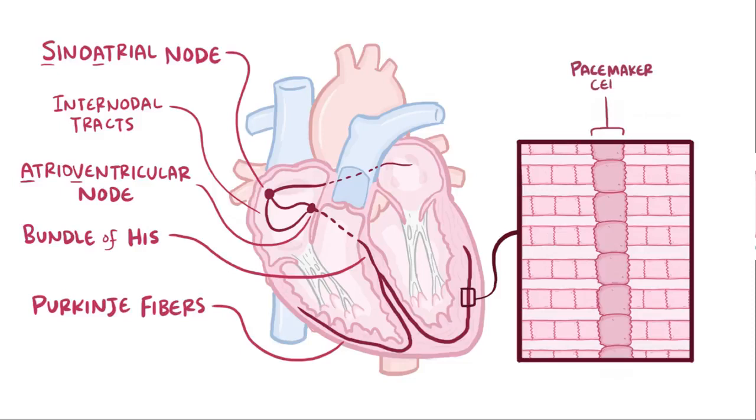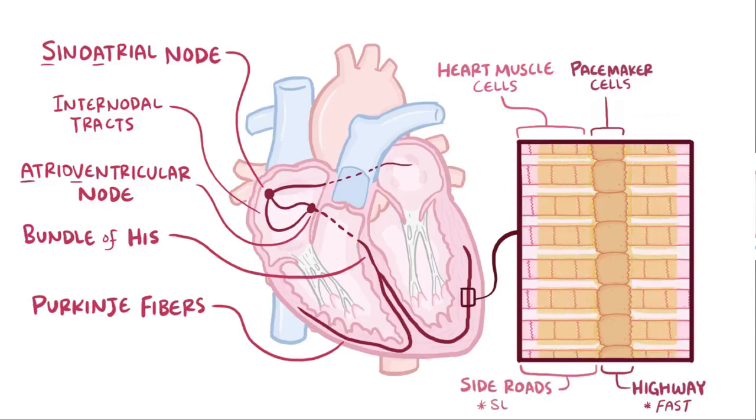All around these pacemaker cells are heart muscle cells, or cardiomyocytes, and they pick up the action potentials too, but that happens just a tiny bit more slowly. So we can think of these bands of pacemaker cells as highways that carry the action potential to its destination super fast, and then these muscle cells are like little side roads where it's a little slower.